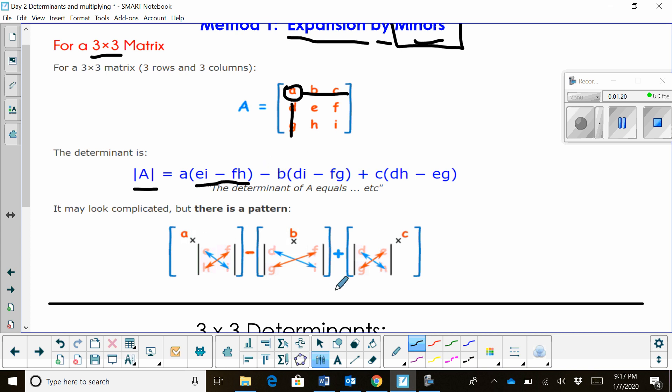Then what we're going to do is move to the second position. We're going to now subtract and notice it's minus B. So we're going to take B as the coefficient. We're going to take out the top row again, but we're going to take out the column B is in.